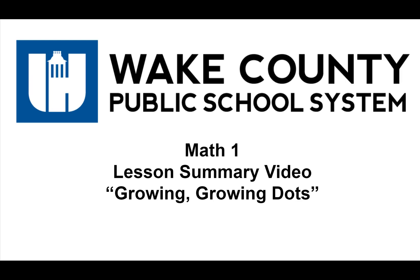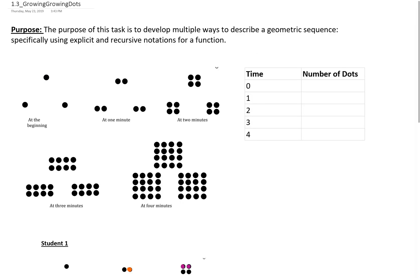Welcome to the Math 1 lesson summary video for the task 'Growing Growing Dots.' In your module, this is a develop understanding task. The purpose is to develop multiple ways to represent a geometric sequence, specifically using explicit and recursive notations for a function. In the last task we developed ways to represent an arithmetic sequence, and now we're doing the same for a geometric sequence.